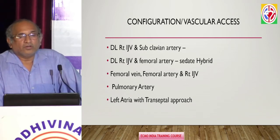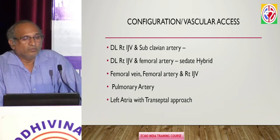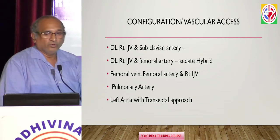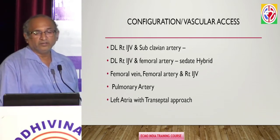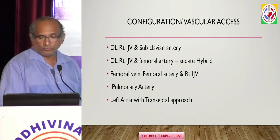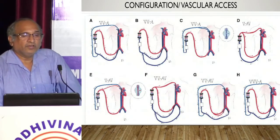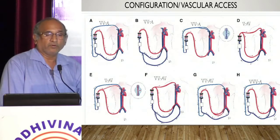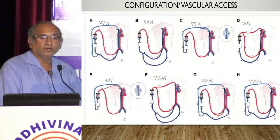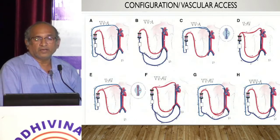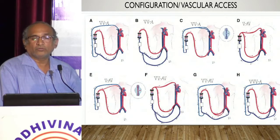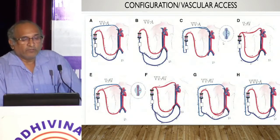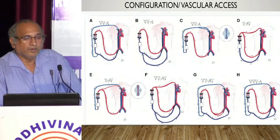Depending on the configuration and vascular access used, there are different types of ECMO. You can use a double lumen IJV with a subclavian artery — that becomes VV-A ECMO. Or you can have a double lumen jugular with a femoral artery — again VV-A ECMO. You can drain from the femoral vein, return to the IJV, and drain from IJV and return in the femoral vein up to the right atrium. You can also drain both from femoral vein and return to the RA, or use a double lumen and drain from it returning to the RA.